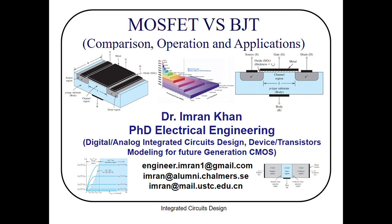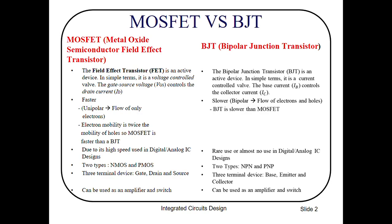Since 1948, transistors have been used in electronics. MOSFET and BJT represent the two main types of transistors used today. Transistors are used in amplification and switching. MOSFET offers advantages over BJT in modern electronics and computers, as these transistors are more compatible with silicon processing technology. Our today's lecture focus is MOSFET versus BJT, so let's try to differentiate between a MOSFET and a BJT.